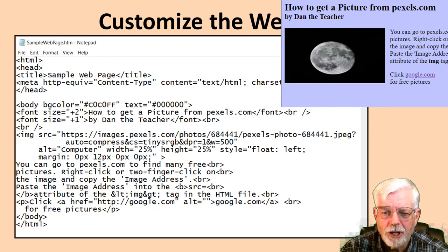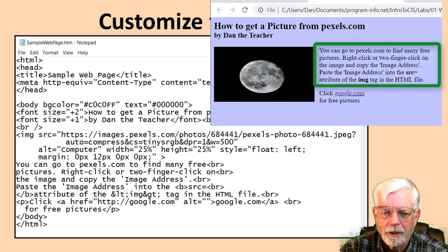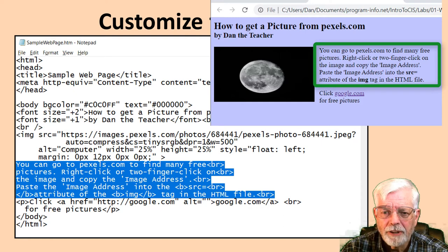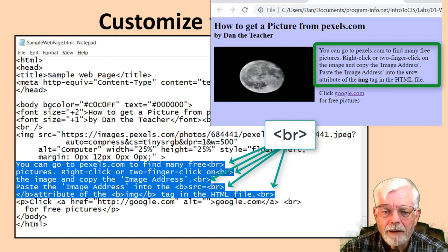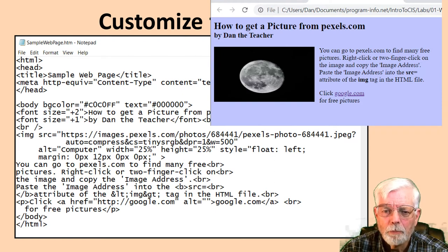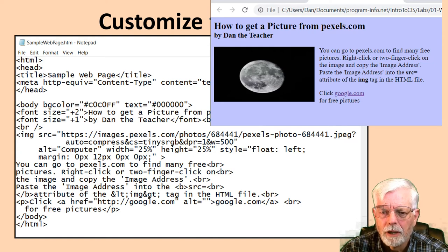I'll show you how to change the image picture to a new one in just a moment. Change the block of text that discusses why I am teaching the class to something new. The BR tags move the text down to the next line. If you don't use any of the BR tags, then the text will automatically move down to the next line when it reaches the right side of the browser's window — this is called Word Wrap. You can see the word wrapping change if you change the size of the browser window.